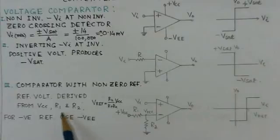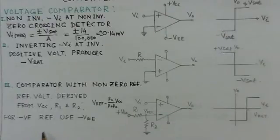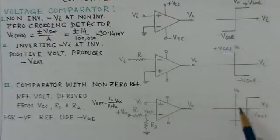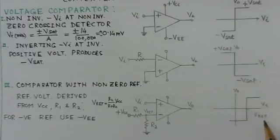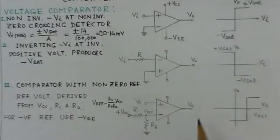The reference voltage is derived by the combination of R1 and R2, where V_reference = (R2 / (R1 + R2)) × V_CC, the DC voltage applied. The corresponding transfer characteristics show the transition not at 0 volts but at the reference voltage set by the R1 and R2 network. If you want to set a negative reference, instead of plus V_CC you can apply a negative supply minus V to the circuit to get a negative reference voltage.